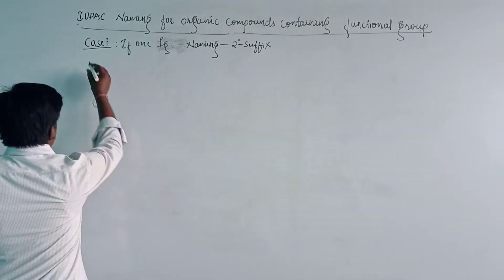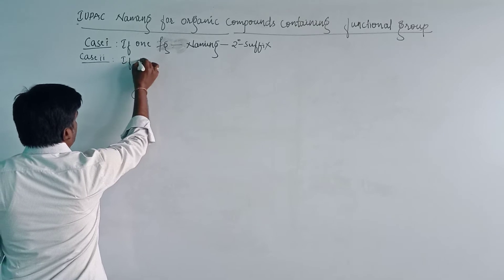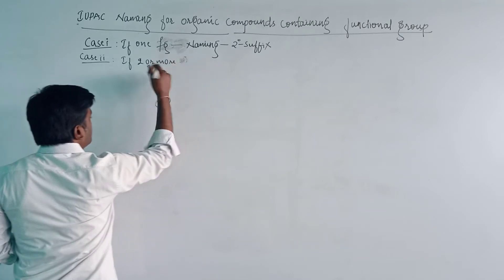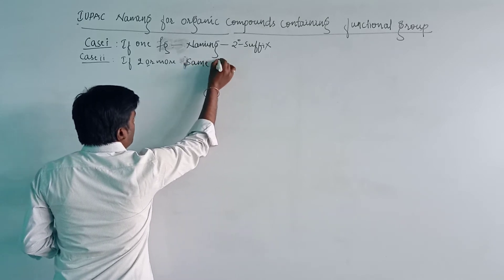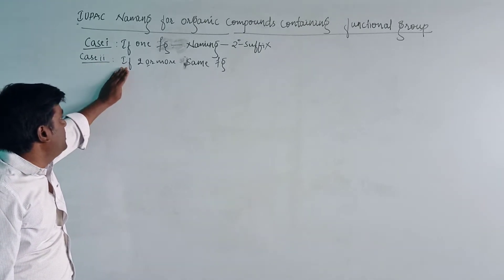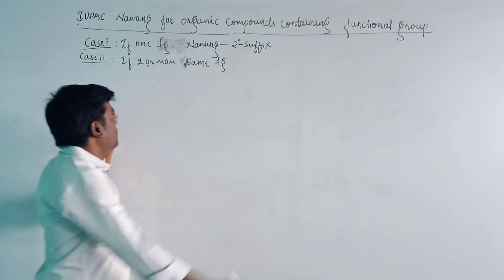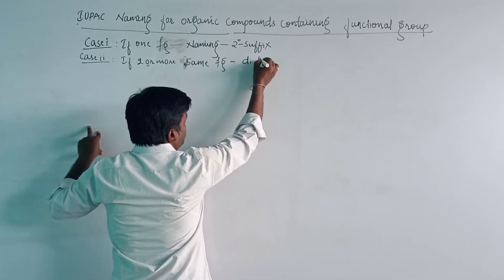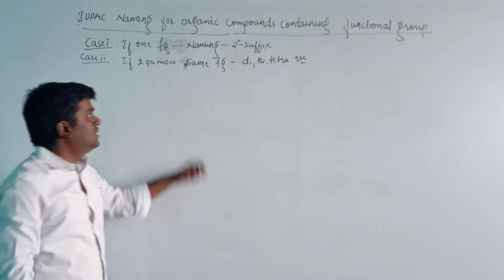Case 2: if two or more of the same functional groups are present in the organic compound, then we will use the prefixes di, tri, tetra, etc. before the secondary suffix.